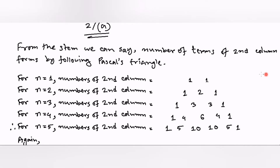Question number 2: they gave a pattern following Pascal's triangle. We can see 4 rows: the first row has terms 1 and 1, the second is 1 2 1, then 1 3 3 1, then 1 4 6 4 1. They have asked for n=5: how many numbers are in the second column and what are the terms?